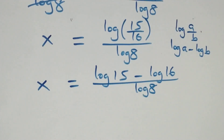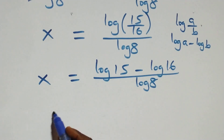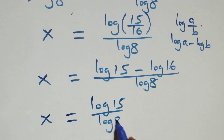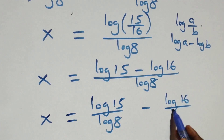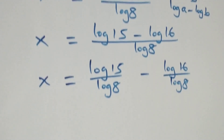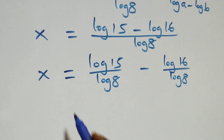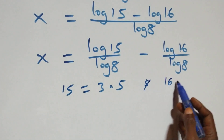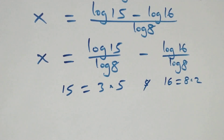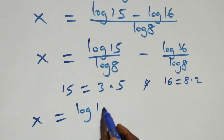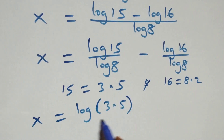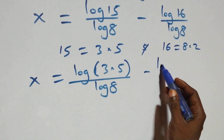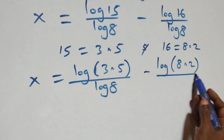From here, the next step is we separate this into two fractions, and we have x equals to log 15 over log 8, minus log 16 over log 8. From what we have here, we can express 15 as 3 times 5, and also 16 can be expressed as 8 times 2. So what we have becomes x equals to log(3 × 5) over log 8, minus log(8 × 2) over log 8.